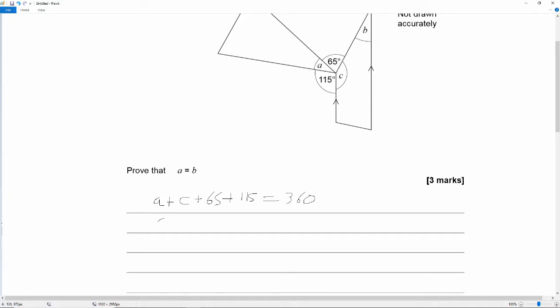So A plus C plus 65 plus 115. 5 plus 5 is 10, 60 plus 120 is 180. So that's 180 is equal to 360. Take the 180 across. So A plus C is equal to 180 degrees, because 360 minus 180 is 180.